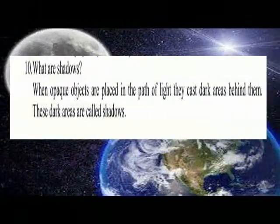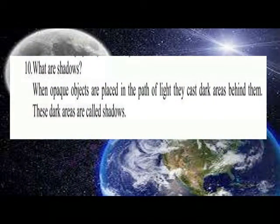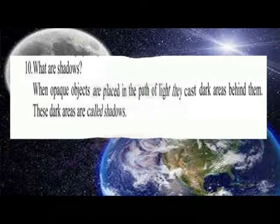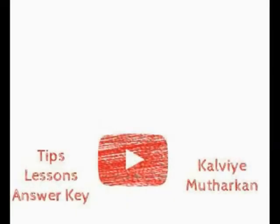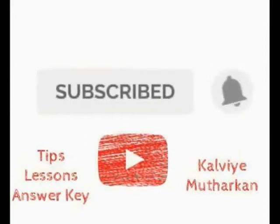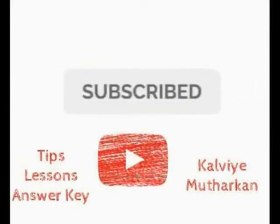What are shadows? When opaque objects are placed in the path of light they cast dark areas behind them. These dark areas are called shadows.